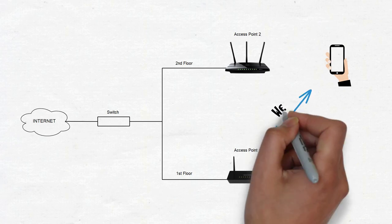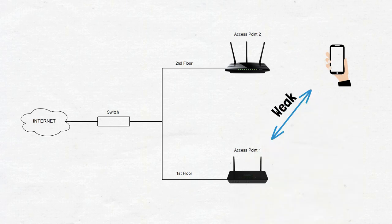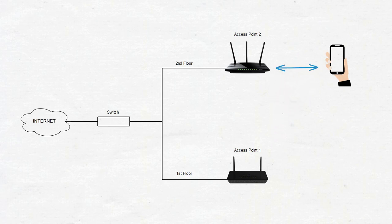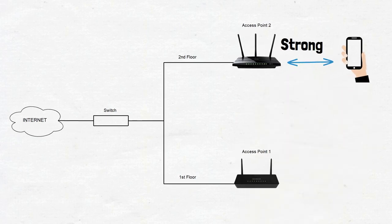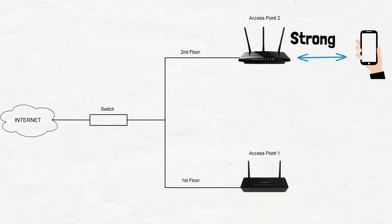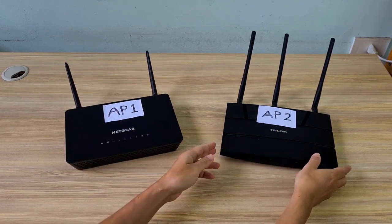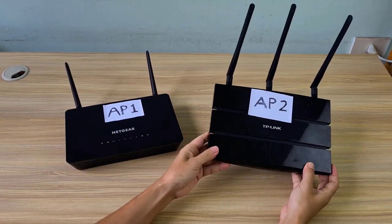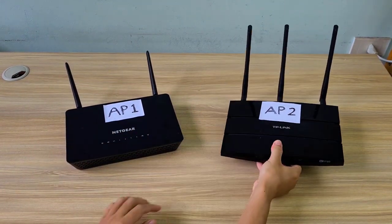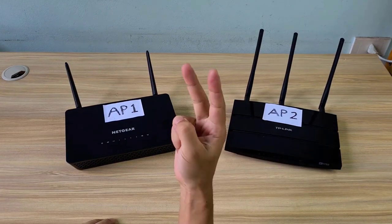For example, you have two access points, one on the first floor and one on the second floor. When you move from the first floor to the second floor, your phone's connection is roamed from the first floor access point to the second floor access point. This way your connection is always seamless when moving between areas.